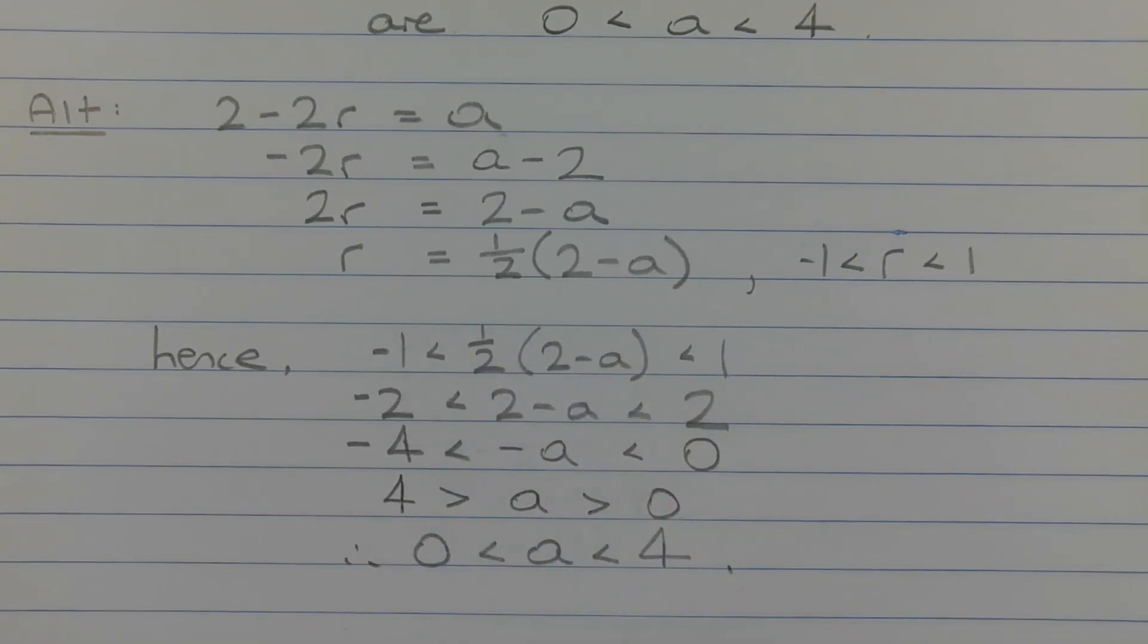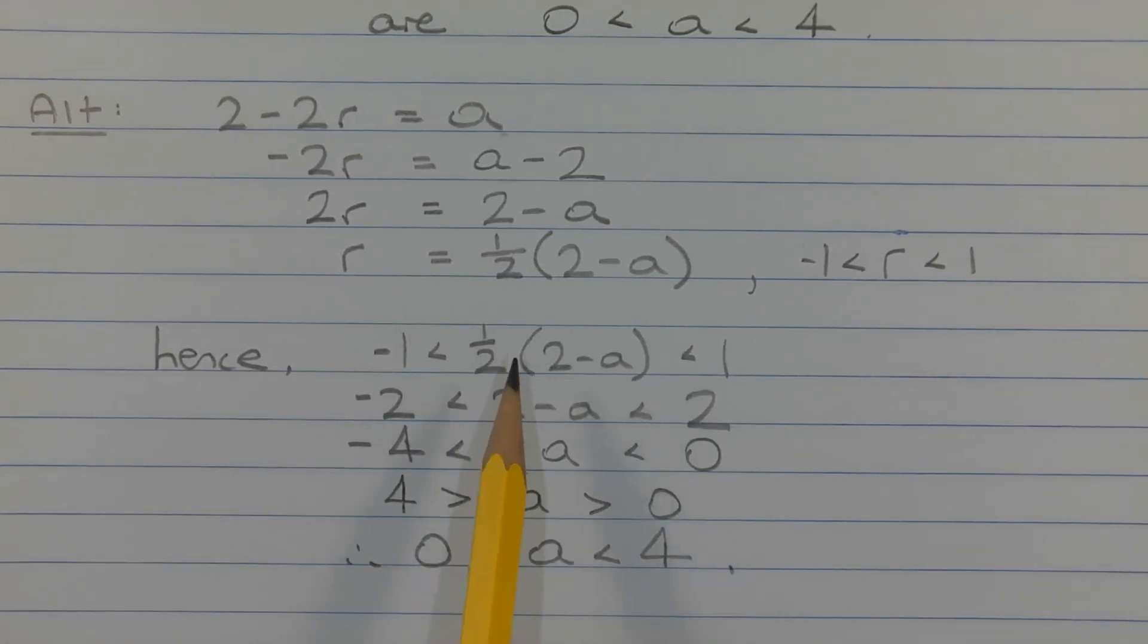And again, just like the previous solution, we know that R is a value between negative 1 and 1. So we can solve this as a three-way inequality. Hence, rather than writing R in the middle of this three-way inequality, I could write half times 2 minus A in brackets. So we have half outside of 2 minus A in brackets is greater than negative 1 and less than 1.